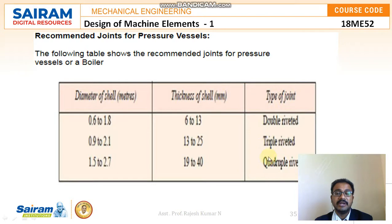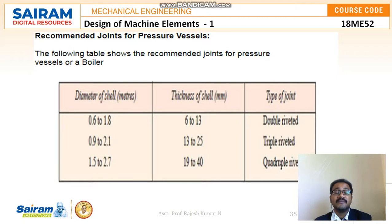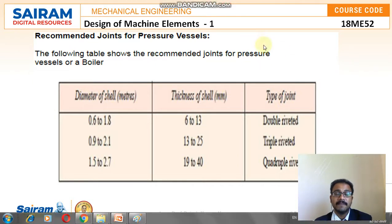There is a table where pressure values for boilers are recommended for different types of joints based on thickness. You can see double riveted, triple riveted, and quadruple riveted options, with the corresponding recommended shell thickness and shell diameter in meters. This gives a clear understanding of the purpose of this design considering the thickness of the sheet.